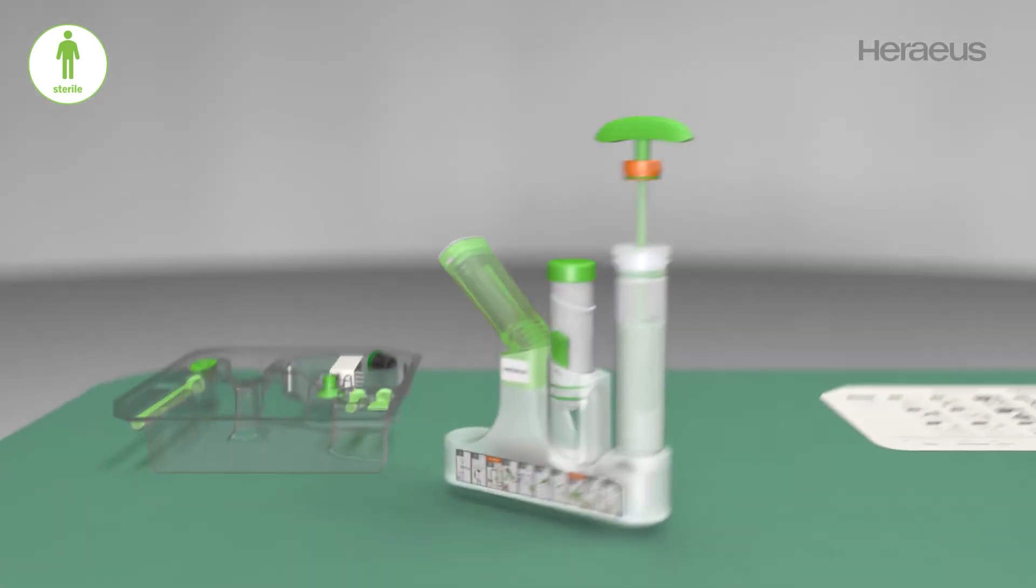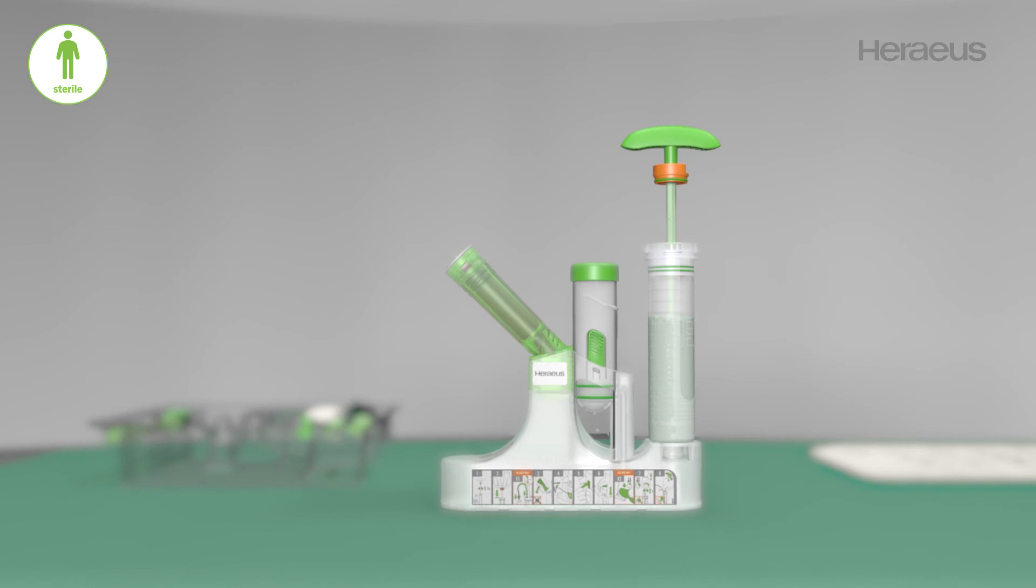The color coating of the Pelikos Pro guides you through the whole mixing process. The sealing ring is colored orange and marks the first step.